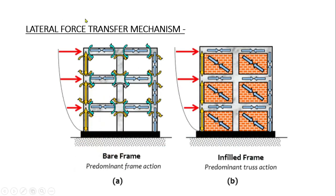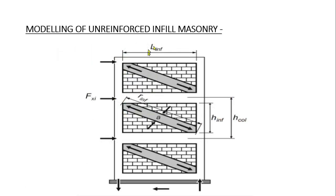We can see how the lateral load transfer changes when we consider the infill versus when we do not. When we consider only a bare frame, there is frame action — the lateral load is transferred from beam to column and column to beam at beam-column joints, and then down to the foundation. But with an infill frame, the action becomes truss action: forces are also taken by the infill, which acts as a compression member along the diagonal.